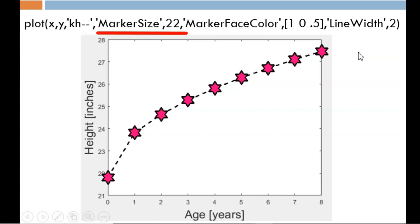The first name value pair increases the markers to size 22, which is why they appear so large on the plot. The next name value pair manually adjusts the face color of the markers. Here, the RGB triplet is 100% red, 0% green, and 50% blue. So, we see a color that is tilted towards the purple side of red.